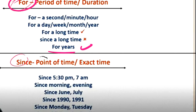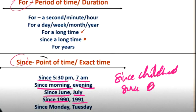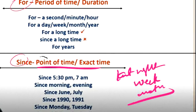If we use 'since', it means point of time, exact time. Since 5:30, 7 am, since morning, since evening, since June, since July, since 1990, since 1991, since Monday, since Tuesday, since childhood, since Diwali, since Holi, since last night, since last week, since last month.